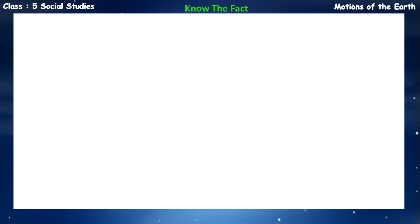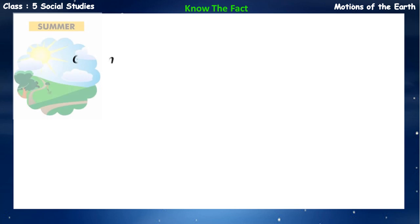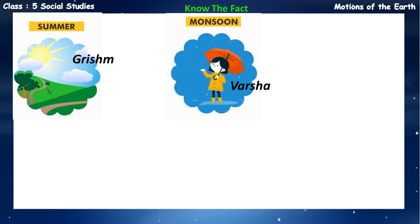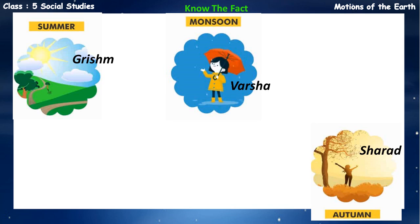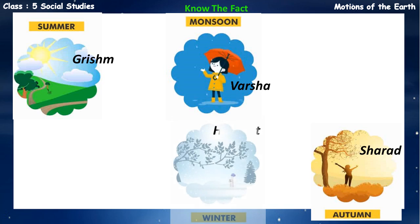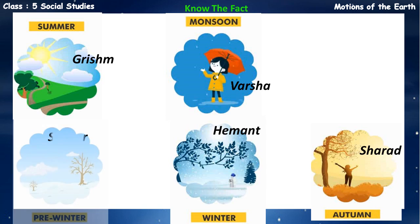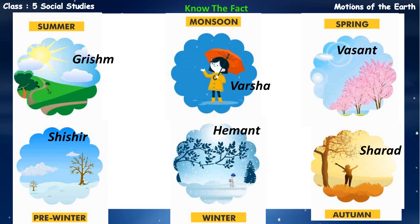Know the fact: six seasons in Ancient India were identified with the following Sanskrit names – Grisham (Summer), Varsha (Monsoon), Sharad (Autumn), Hayment (Winter), Shishir (the season when snow thaws), and Vasant (Spring).